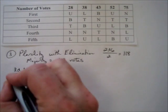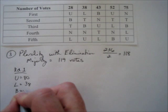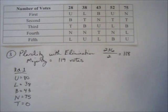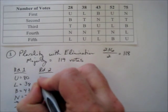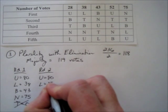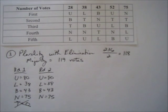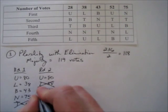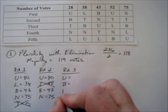Round one is the same as plurality: Usher has 80, Lifehouse has 38, Blue Cantrell has 43, Nelly has 75, and Train has zero. Nobody has 119 votes, so we eliminate the lowest vote-getter. Train is obviously the lowest, and since nobody voted for Train first, eliminating Train changes nothing. Still nobody has a majority, so we eliminate the next lowest: Lifehouse with 38 votes.